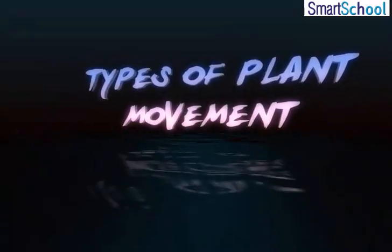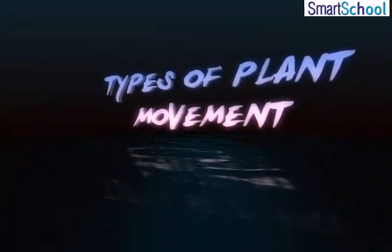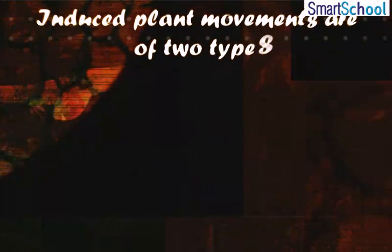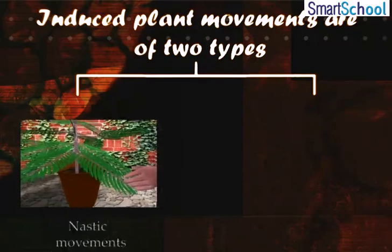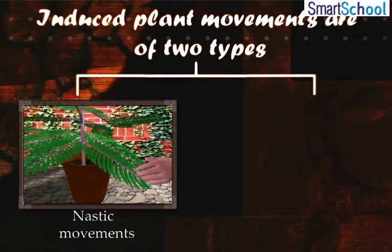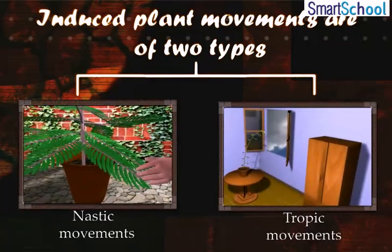Types of Plant Movements. According to the nature of stimulus, plant movements are of two types: 1. Nastic Movements and 2. Tropic Movements.